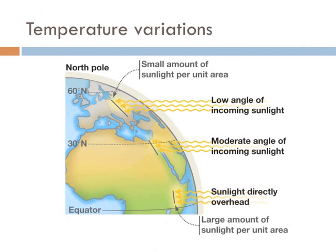Nearly all of the biomes on Earth are dictated by two factors: how much sun they receive and how much water they receive, and the amount of water they receive is related to how much sunlight they receive. At the equator, the sun is directly overhead, so it has the most sunlight per unit area of any latitude. At the middle latitudes, there is a moderate angle of incoming light, creating moderate temperature changes. And at low latitude, there is the lowest angle of incoming light, giving the smallest amount of sunlight per unit area.